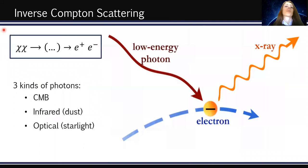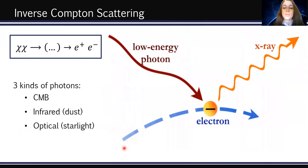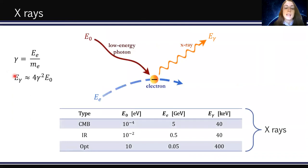Now coming to the protagonist of our work: the inverse Compton scattering. Dark matter particles annihilate and produce pairs of electrons and positrons. These electrons and positrons, propagating through our galaxy, can interact with the low-energy photons in the Milky Way — we consider three kinds: CMB, infrared light from dust, and optical starlight. The electrons and positrons scatter and transfer part of their energy to these low-energy photons, which therefore become X-rays. The final photon energy after inverse Compton scattering can be approximated as 4γ²E₀, where γ is the Lorentz factor and E₀ is the initial photon energy.